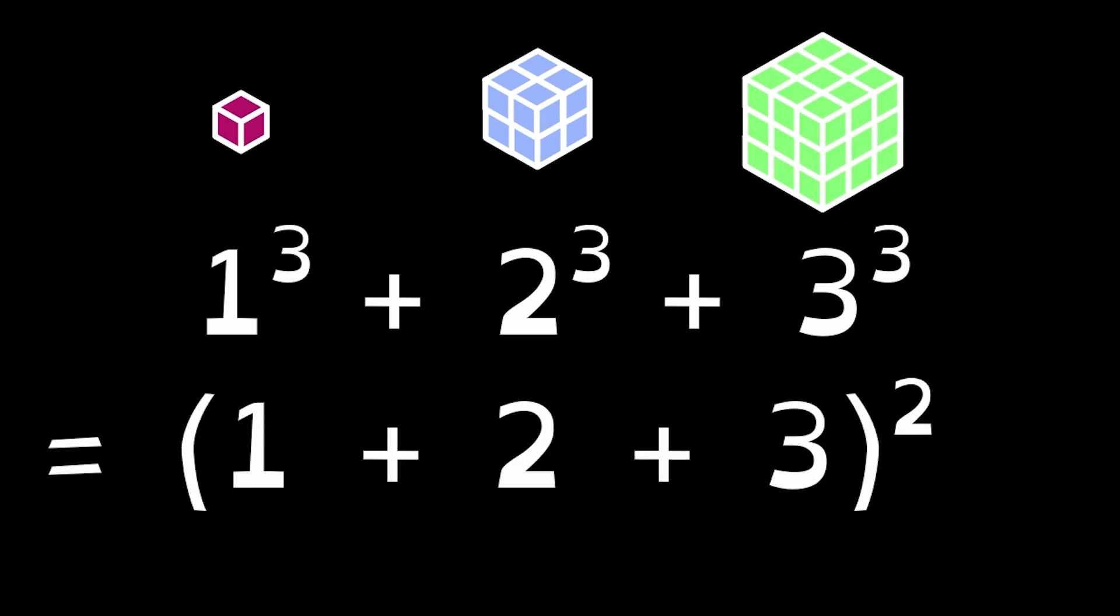Here we have 36 small cubes grouped together into three big cubes, namely 1 cubed plus 2 cubed plus 3 cubed. For Nicomachus' theorem to be true, we need to show that this equals 1 plus 2 plus 3 squared.